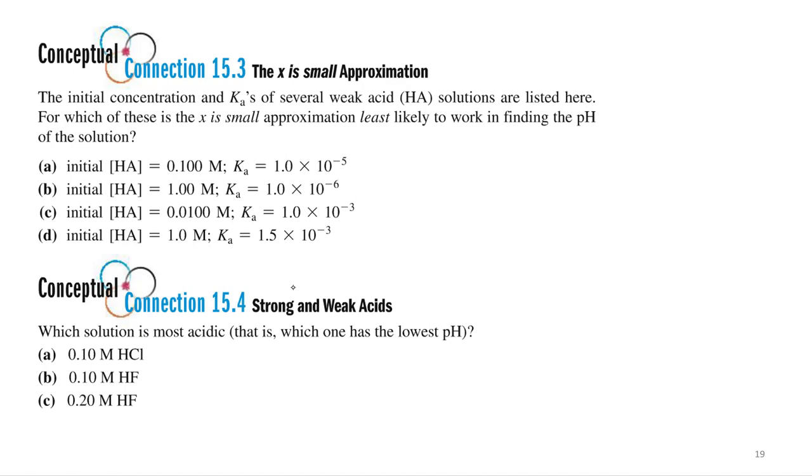The initial concentrations and Ka's of several weak acid HA solutions are listed here. For which of these is x is a small approximation least likely to work? So which one's probably not going to work? Alright, so we'll go through them. I'll give you a little bit of time then we'll vote.